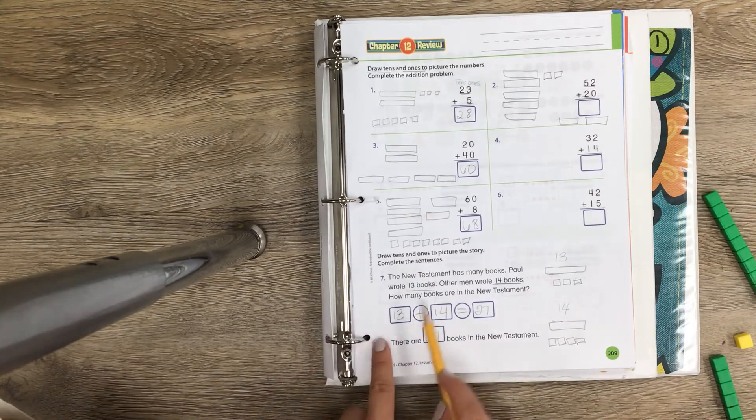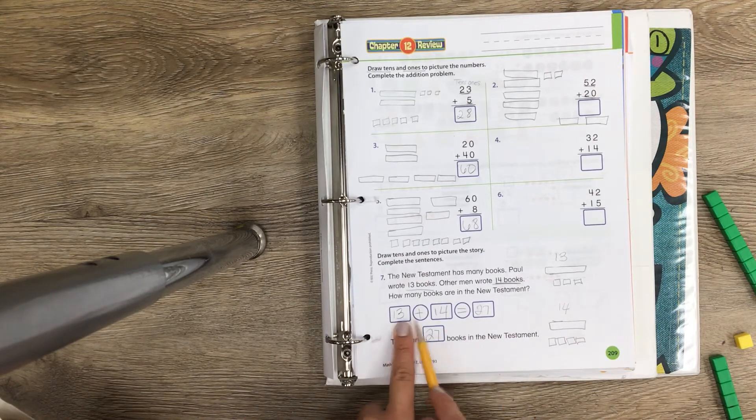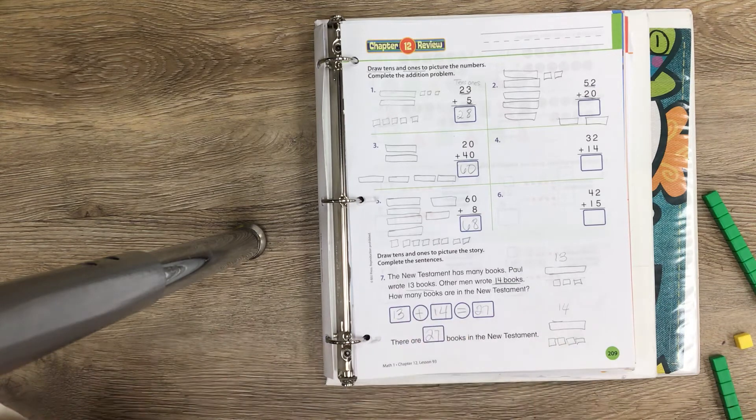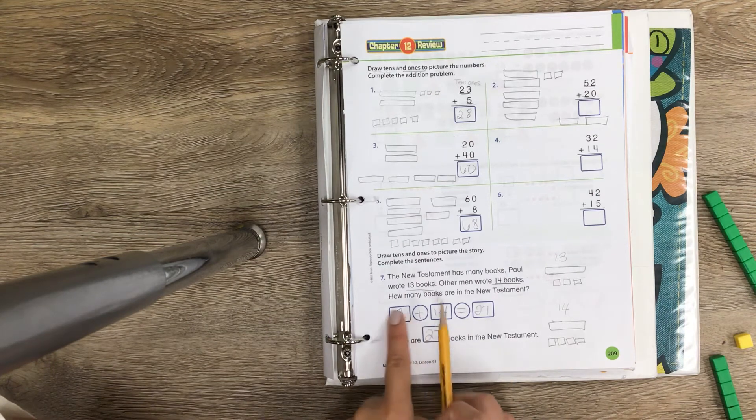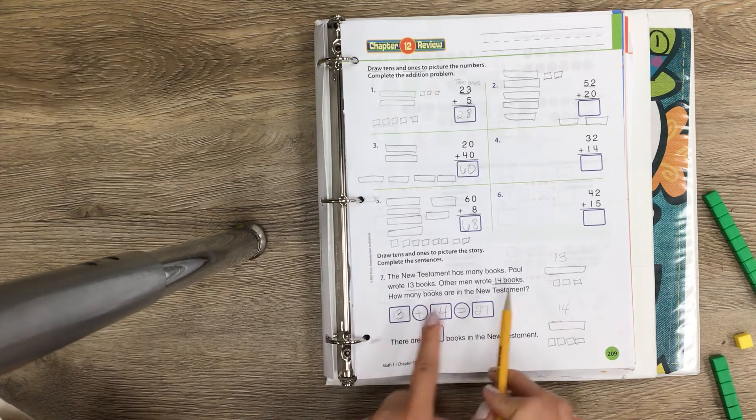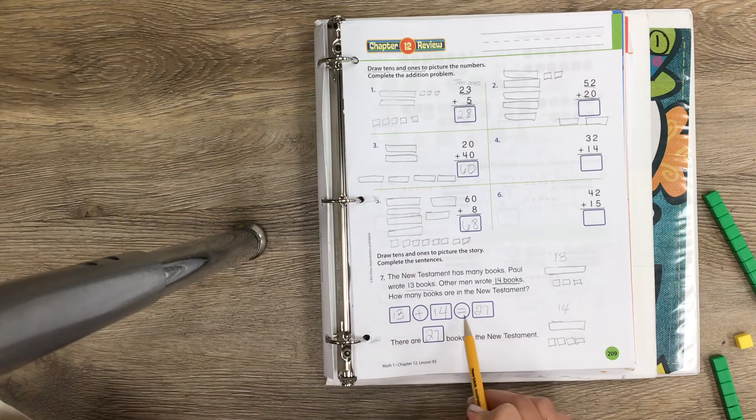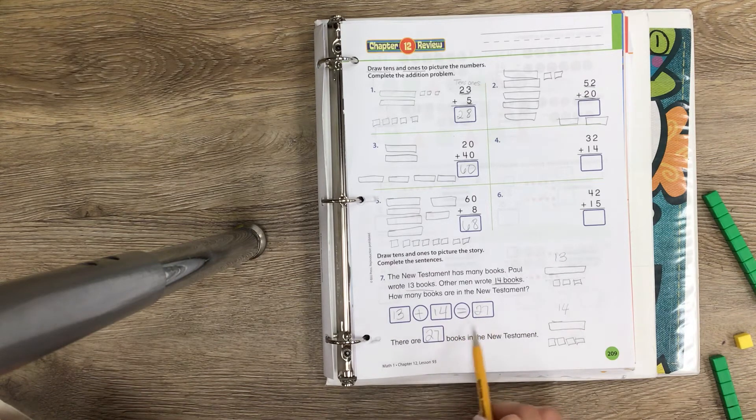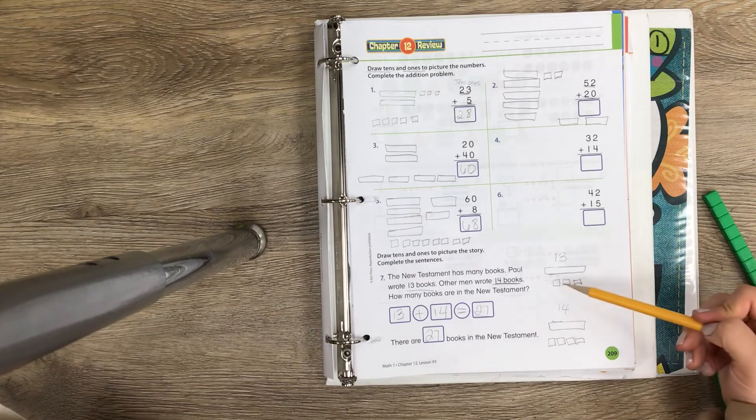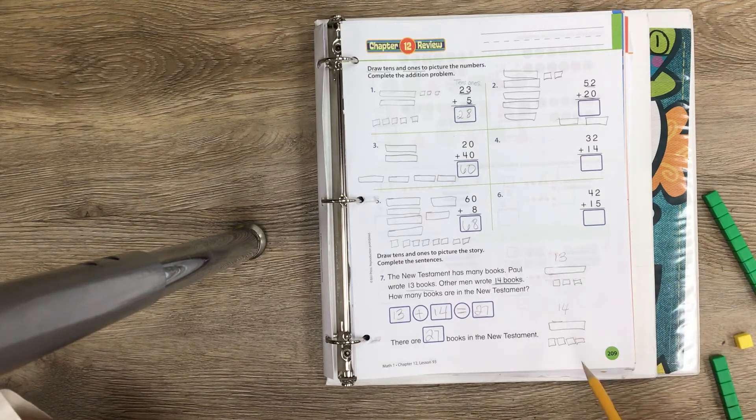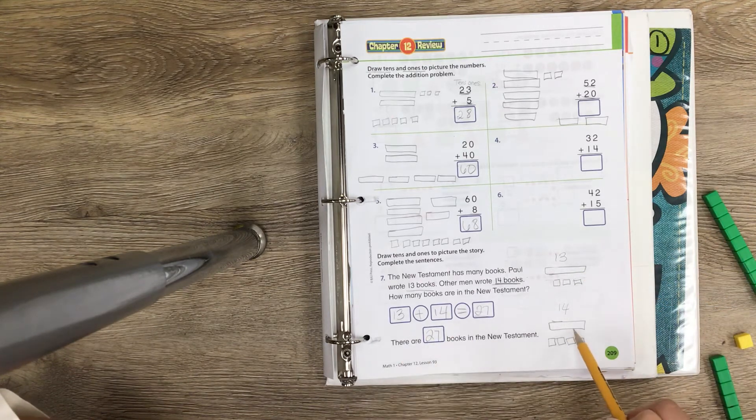They want us to make a math problem with this. So we have 13, write it in the box. They're seeing how many we have in total. Whenever they say 'how many do you have in total,' that means add. So we do our plus sign: 13 plus 14. Can't forget our equal sign.